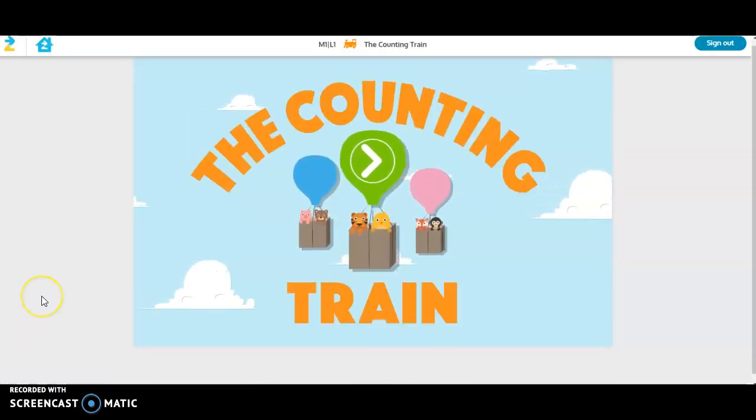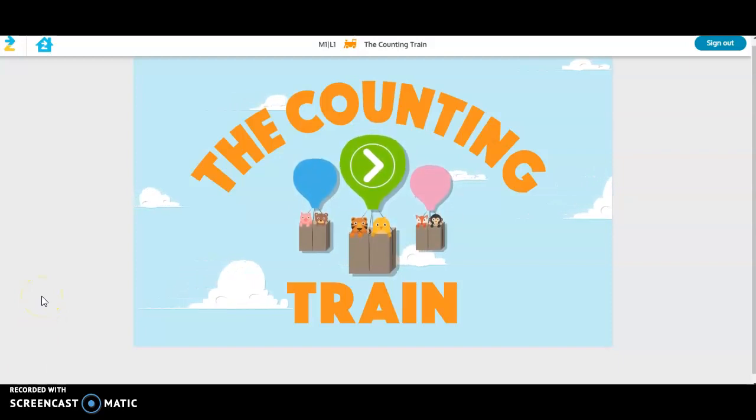This is what you would see when you click start for that first activity and it is called the Counting Train. These might be different activities, but when you're ready to begin you just click on the arrow, the little green balloon, and it will take you through the activity. Let's just watch for a moment as it goes through.